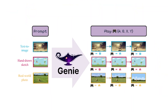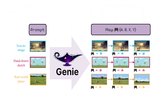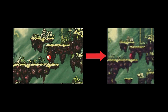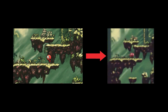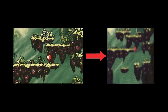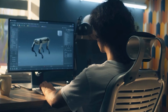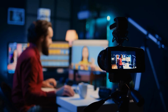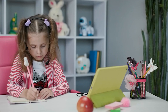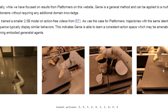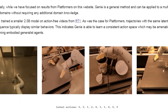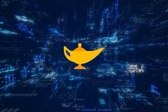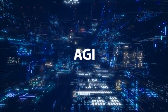Genie is no ordinary AI model — it possesses the ability to decipher latent actions hidden within data. This means it can transform simple images, including children's drawings, into interactive, playable games. The potential applications of this technology are immense, spanning fields such as robotics, content creation, and education. Genie's capacity to see hidden data and draw insights from them is a testament that this AI model brings us a step closer in our quest for artificial general intelligence.